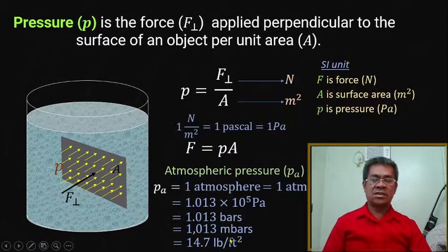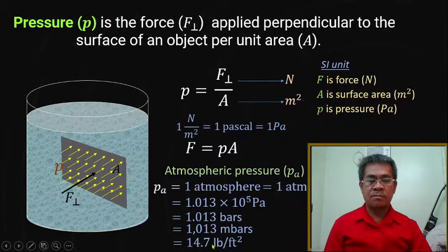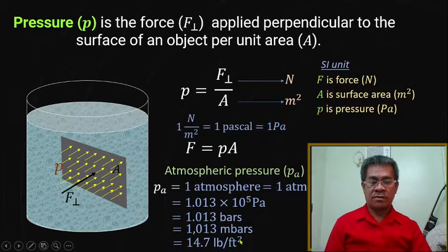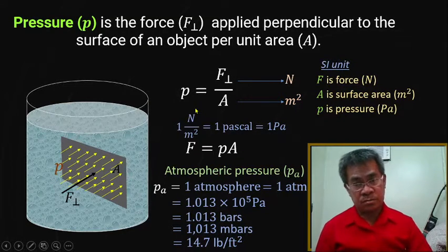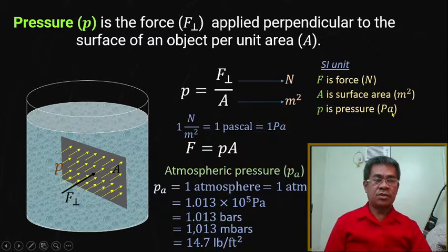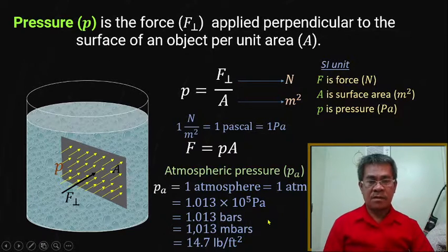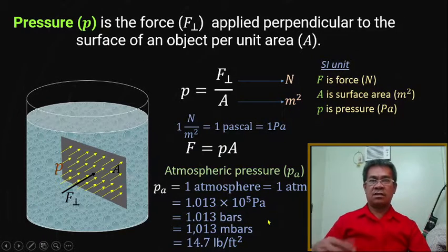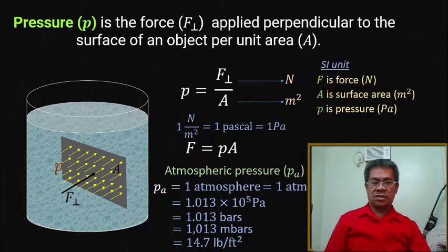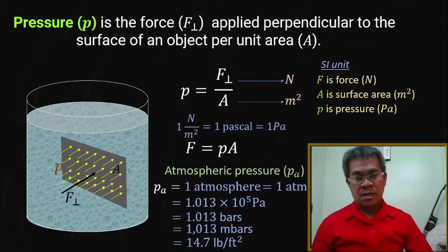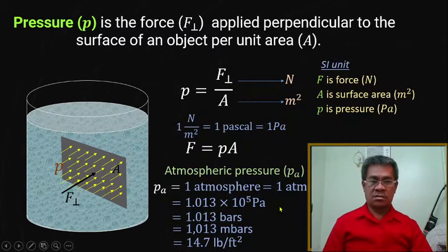In the English system, atmospheric pressure is equal to 14.7 pounds per square foot. There are also other units like psi, which means pounds per square inch — it is also a unit of pressure but belongs to the English system.